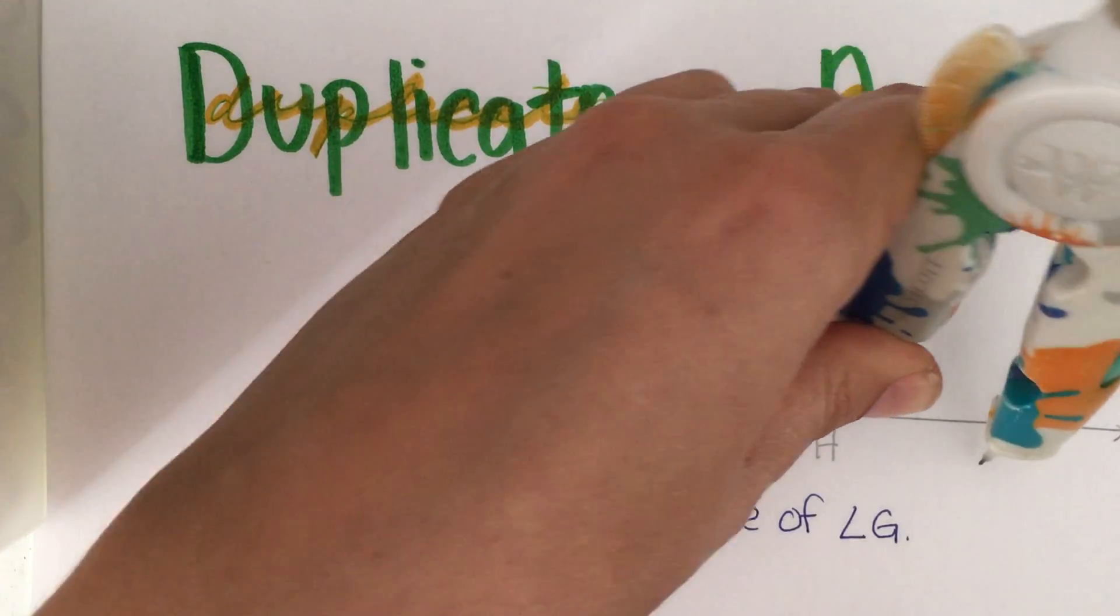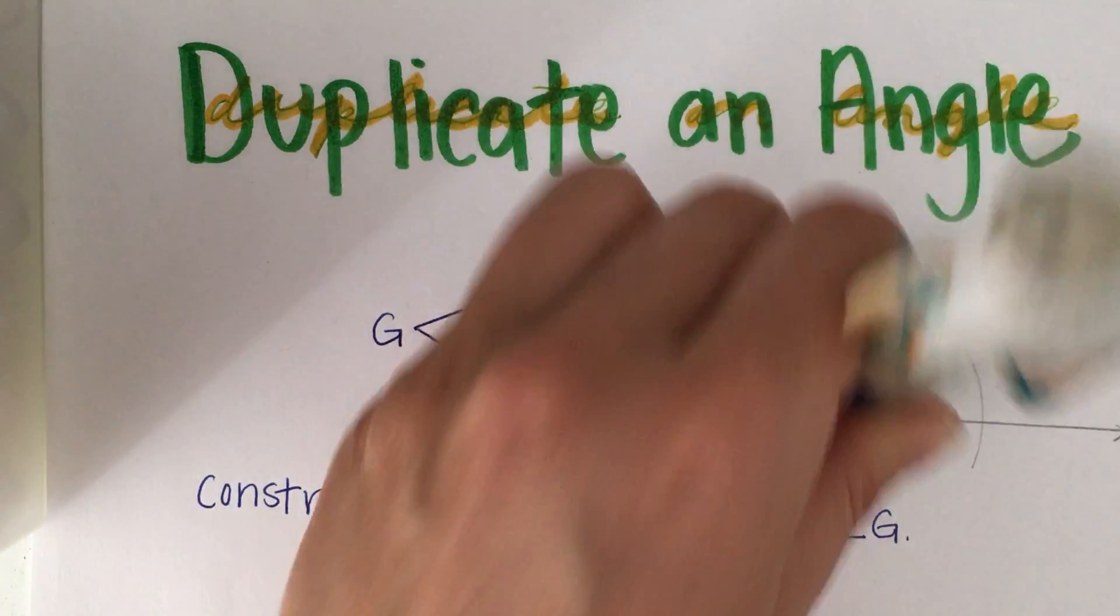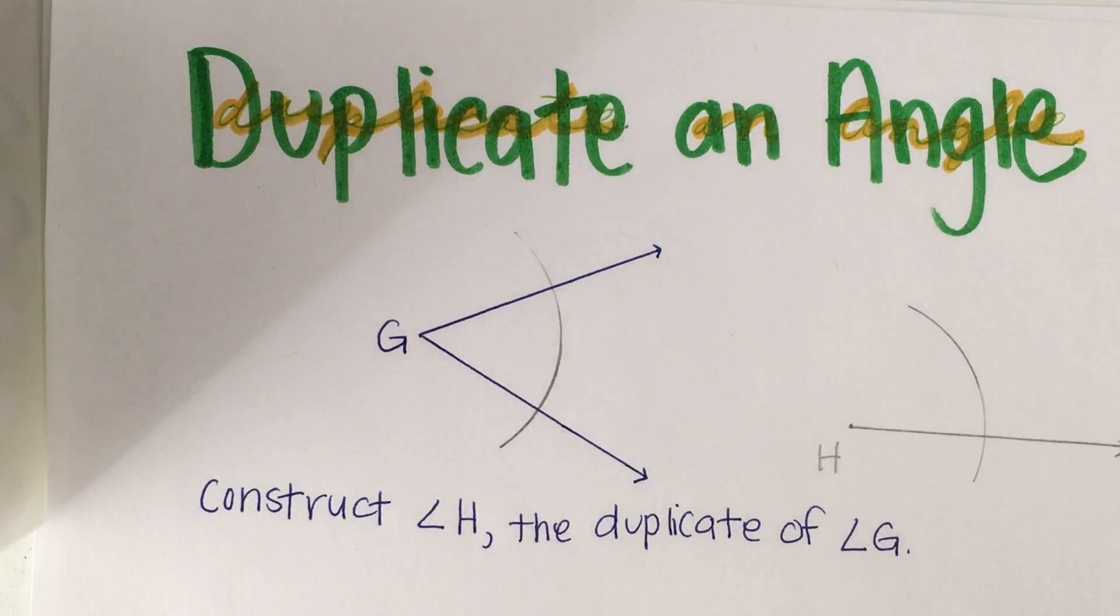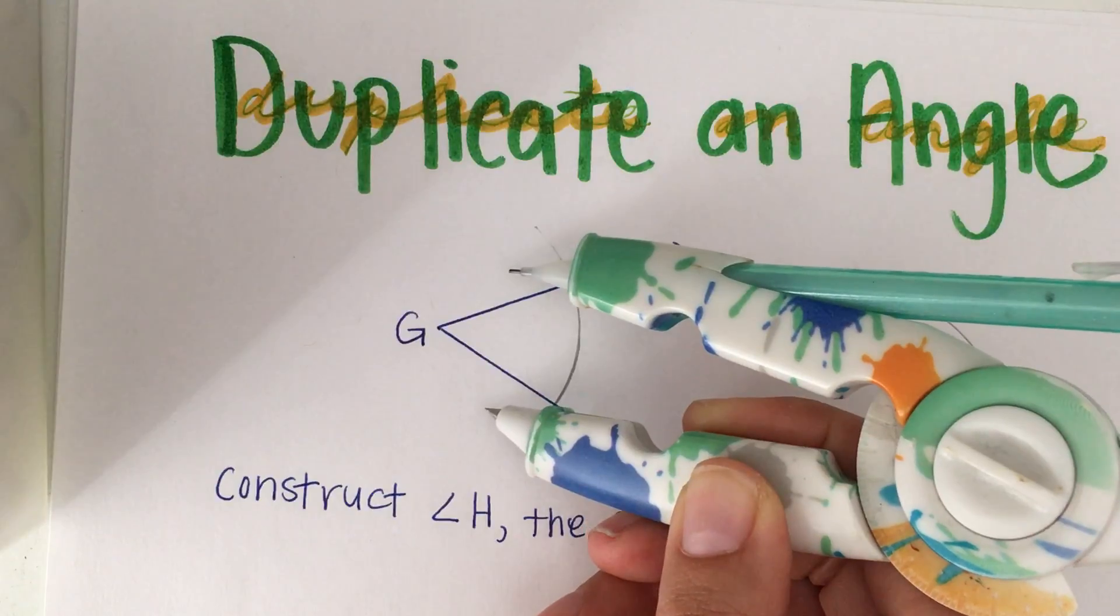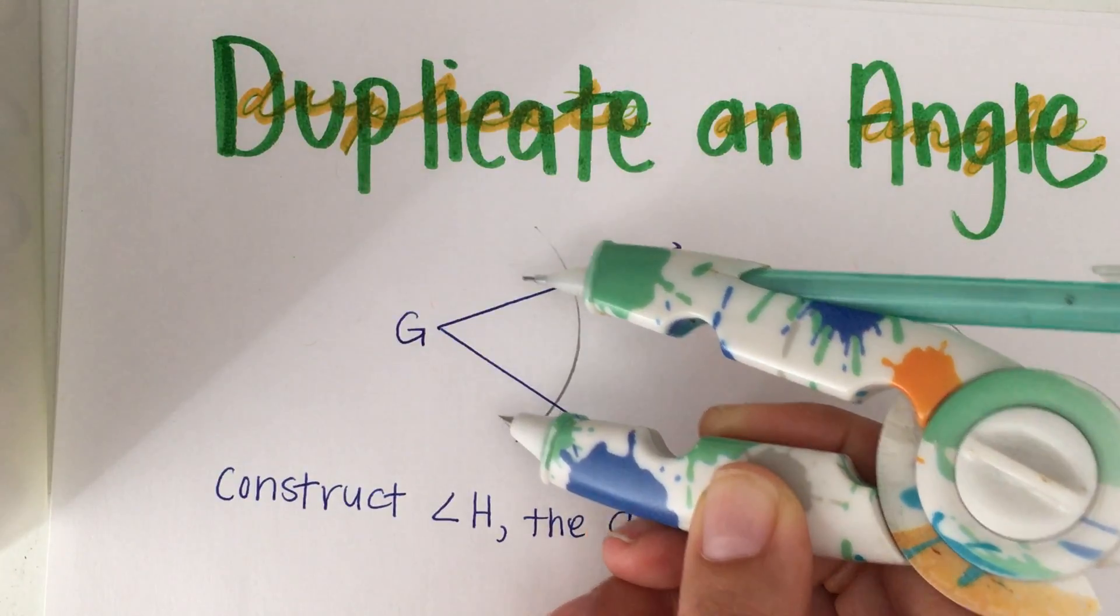I'll draw that same arc in the direction that I want the angle to be. The reason for this arc is if we get closer to point G, the sides of the angle get closer together. If I go away from point G, the sides of the angle get further apart.